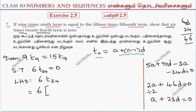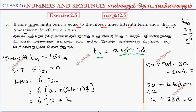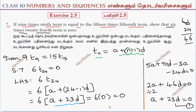Now, 6 times the 24th term: T24 is a plus (24 minus 1) into d, which is a plus 23d. So 6 into (a plus 23d) equals 6 into 0, which equals 0. Hence proved.